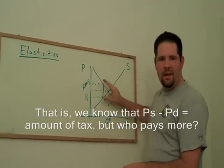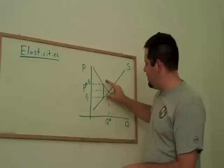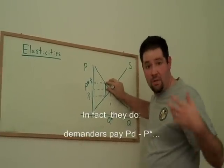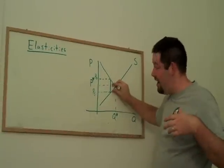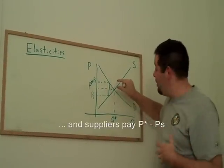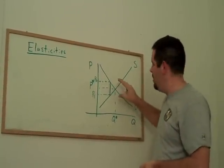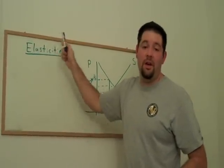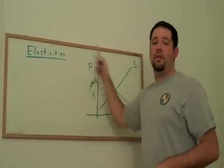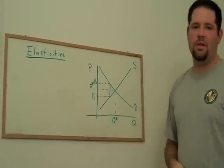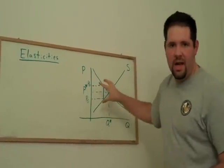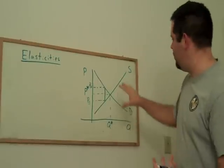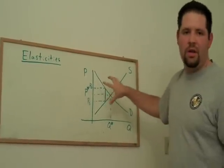In other words, it looks like they split this tax. The tax is this amount. The demanders are hurt by the amount by which the price went up. The suppliers are hurt by the amount at which their price went down. Well, it turns out, the elasticities play a very important role. So let's go ahead and see how this works, not doing a per unit tax, but doing a percentage tax.